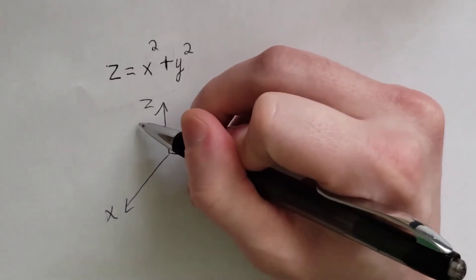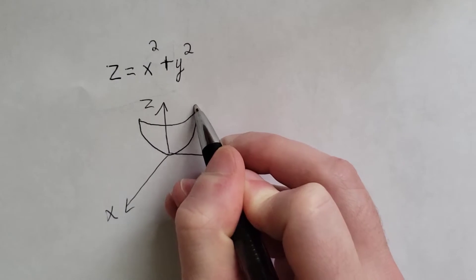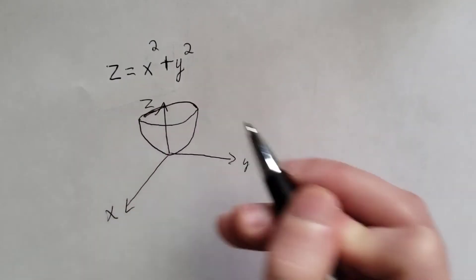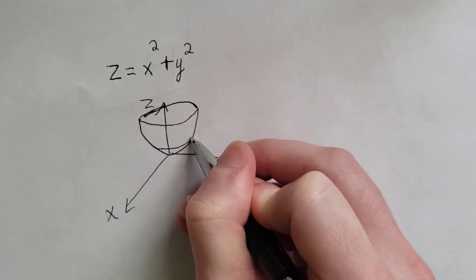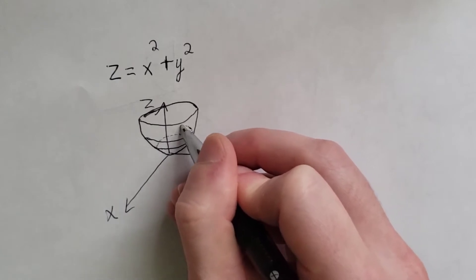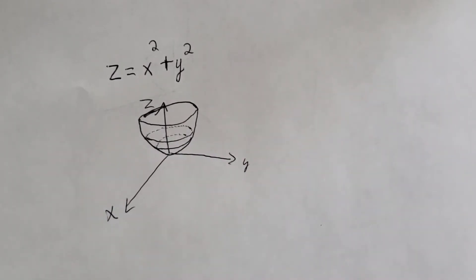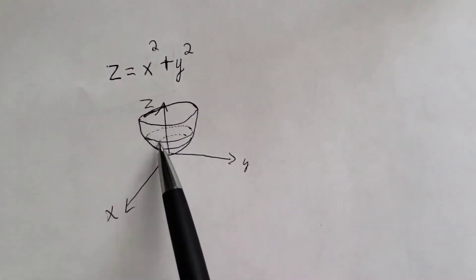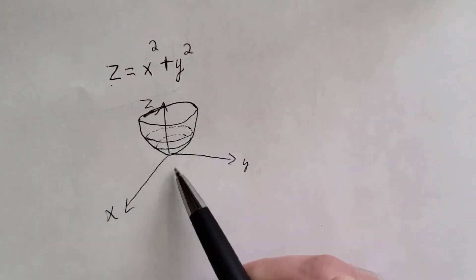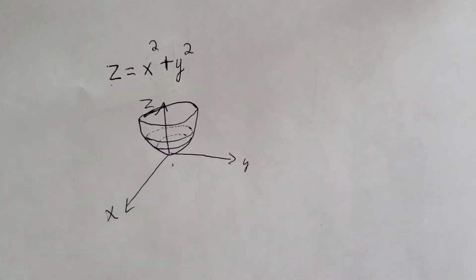That is a paraboloid, so let's draw a parabola and then we can draw a circle here. We have a bunch of concentric circles, and the back half of the circle is drawn using dotted lines to represent the back half of our paraboloid. So we've drawn a paraboloid — z equals x squared plus y squared is a paraboloid facing up, centered around the z-axis. Notice that we don't have anything below because x squared plus y squared is either zero or positive, so z is always positive.